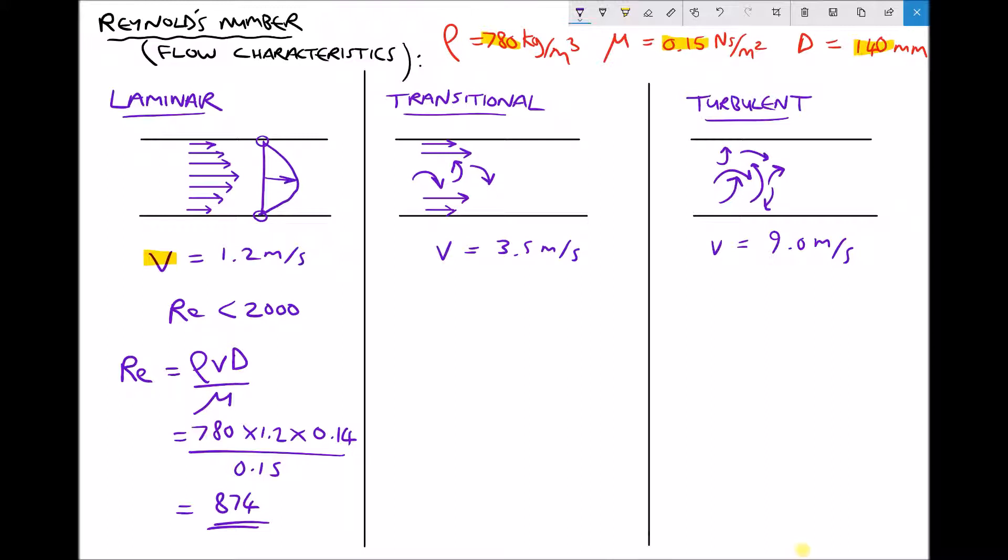Let's move on to our second example. Transitional flow is characterised by Reynolds numbers between 2,000 and 3,000. In this second example, we have a velocity of 3.5 metres per second. So we can calculate our Reynolds number using the density 780, times the velocity 3.5, times the diameter 0.14, divided by the viscosity 0.15, giving us a Reynolds number this time equal to 2548.